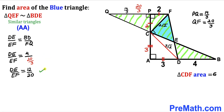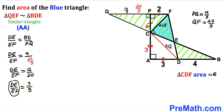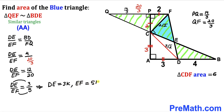Simplifying 12/20 gives us 3/5. So DE divided by EF equals 3/5. Therefore DE equals 3K and EF equals 5K for some constant K.